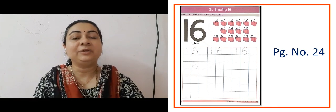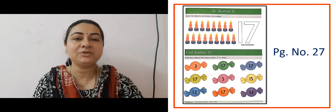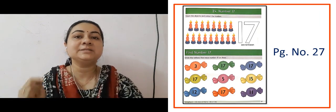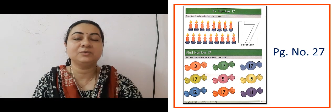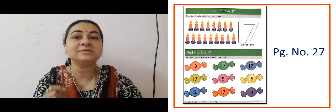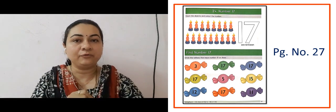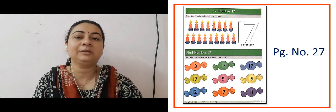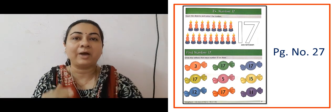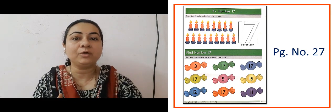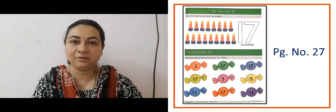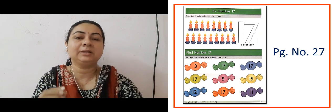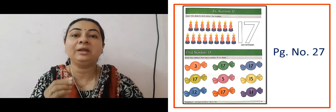The next slide is showing us page number 27, here the number given is number 17. So we counted the number of candles and the outline of 17 is given which we colored. After that, in the Find Number 17 part, the number of toffees are given and 17 is written there.